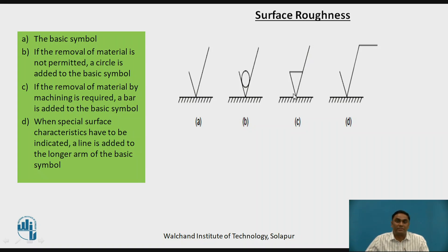The third symbol indicates that removal of material by machining is required — a horizontal bar is added to the basic symbol. The fourth symbol: when special surface characteristics are to be indicated, a line is added to the longer arm of the basic symbol — this longer arm is added.